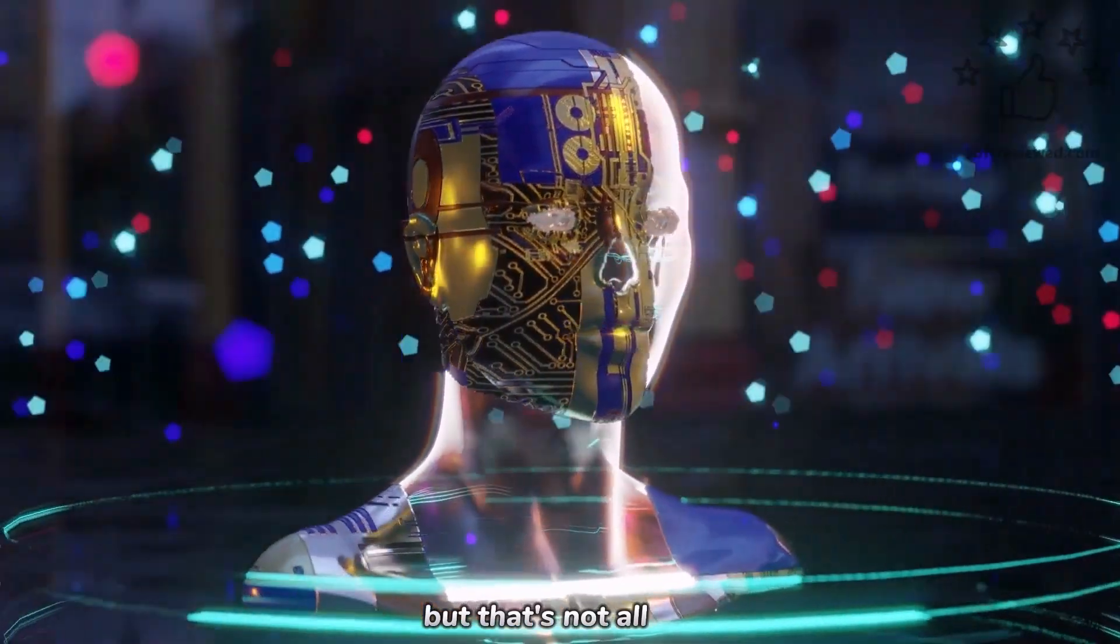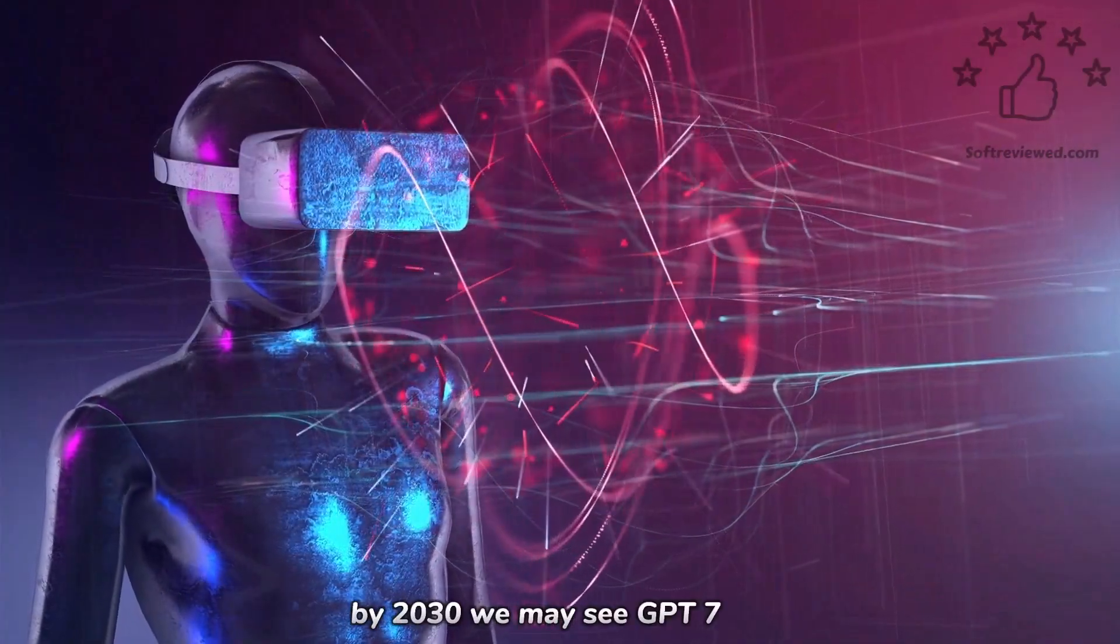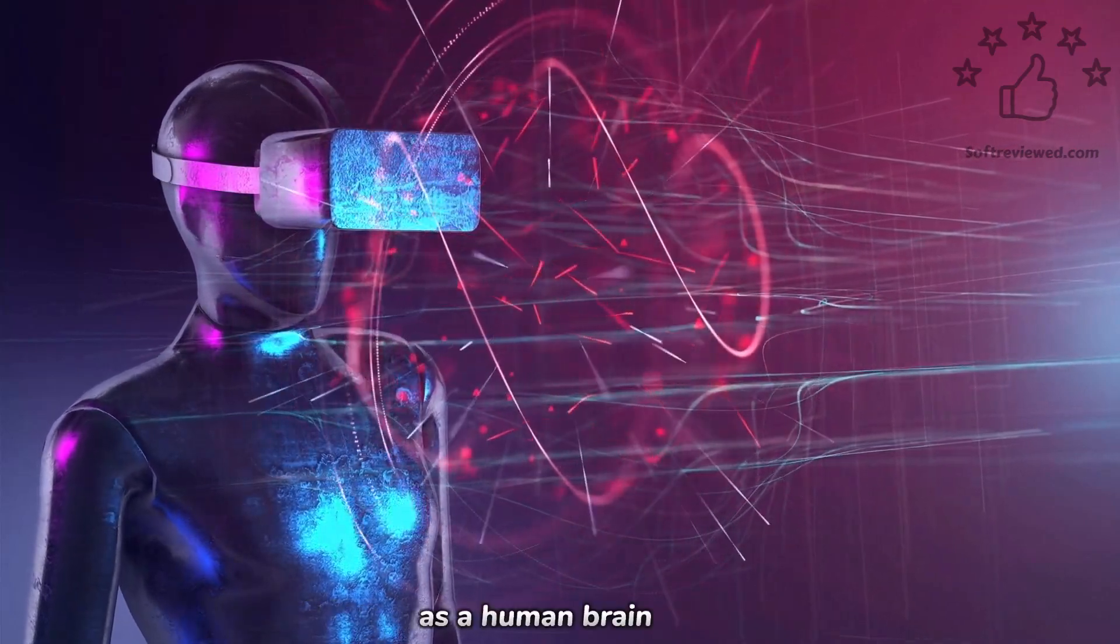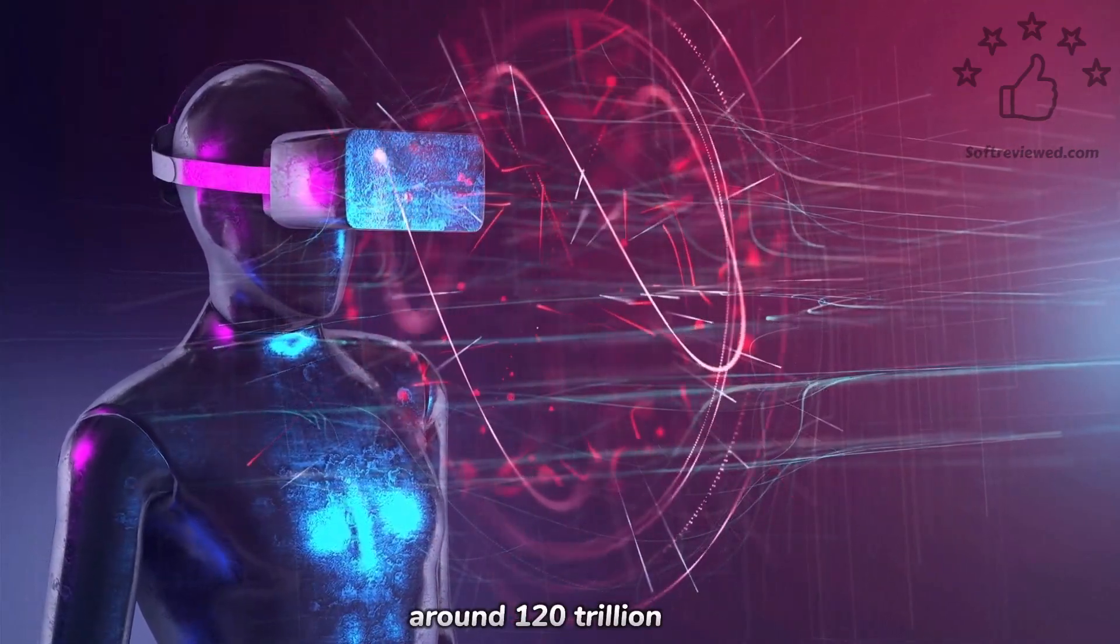But that's not all. By 2030, we may see GPT-7, which is rumored to have as many synapses as a human brain, around 120 trillion.